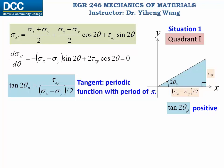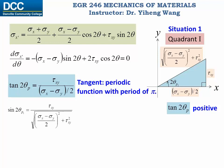Therefore according to the Pythagorean theorem, the length of this hypotenuse is expressed accordingly. And now again according to the right triangle definition, sine(2*theta_p1) is the opposite side over the hypotenuse, and cosine(2*theta_p1) is the adjacent side over the hypotenuse. We substitute these into the original function and get the expression for the first critical stress, which could be either a minimum or maximum normal stress.